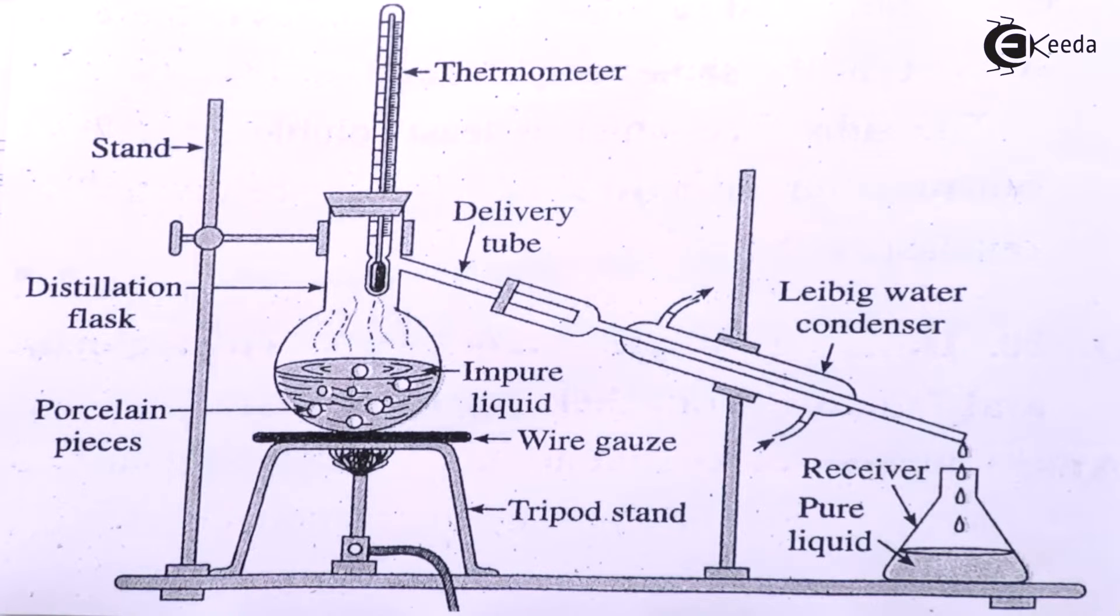That is how we can obtain a pure liquid over here while the rest of the impurity could be in the form of a residue or other substance that could be present in this impure liquid. So that would remain in this distillation flask only.